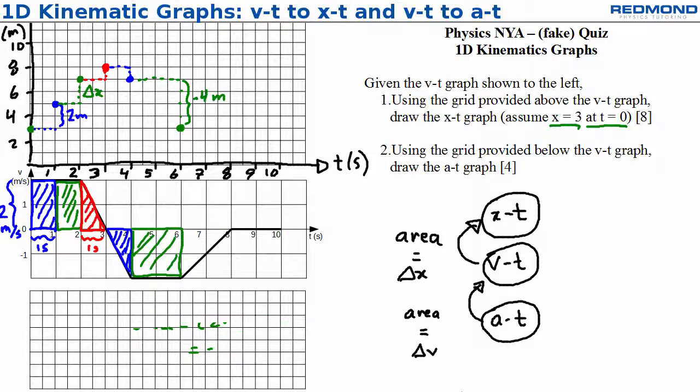From 6 to 8 seconds, there's another triangle with a base of 2 seconds and a height of negative 2 meters per second for an area, base times height divided by 2, of negative 2 meters. Adding negative 2 meters to 3 meters gives X equals 1 meter at t equals 8 seconds.